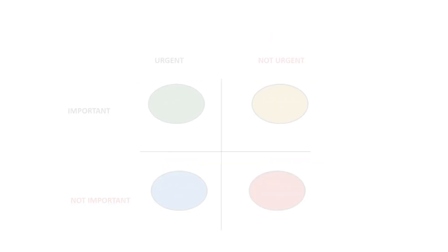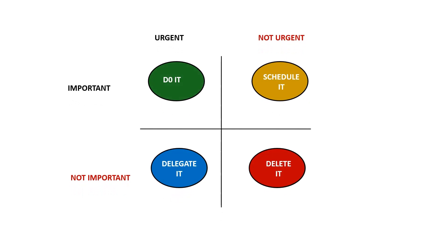So my matrix says: the first quadrant — do it; the second — schedule it; the third — delegate it; and the fourth — delete it. Whatever your to-do list is, just write down all the tasks, make this sort of matrix in your notebook or notepad or whatever device you use, put each task in the appropriate quadrant, and you'll have a crystal clear idea of where to begin.